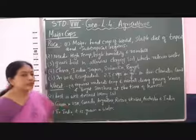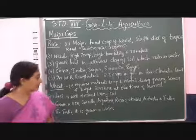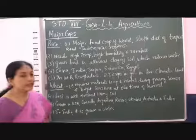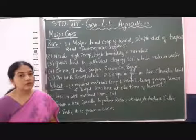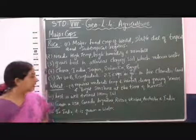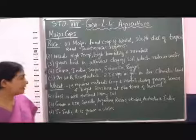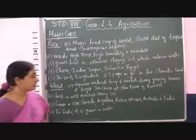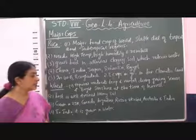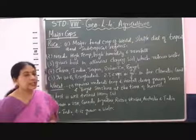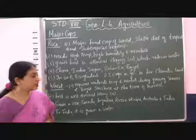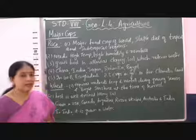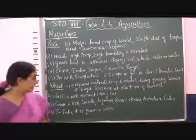Wheat grows well in loamy soil. It is especially grown in USA, Canada, Argentina, Russia, Ukraine, Australia, and India.